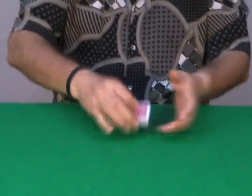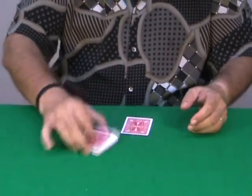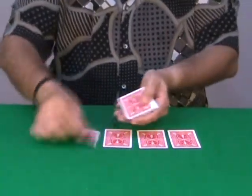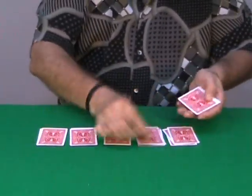The spectator can help you by cutting the cards completely at random. And then you deal the cards in 4 packets, actually 5 packets. 3, 4, and 5, and like this, 5 packets.